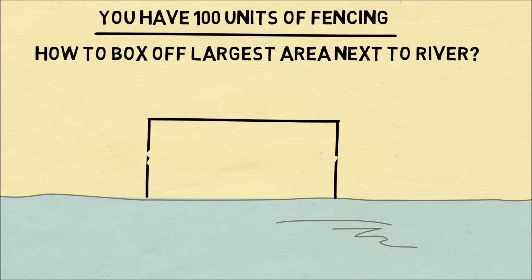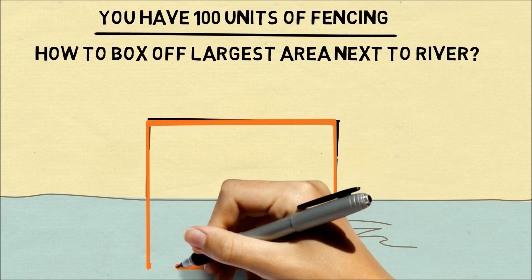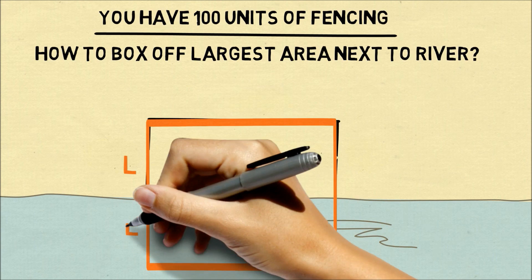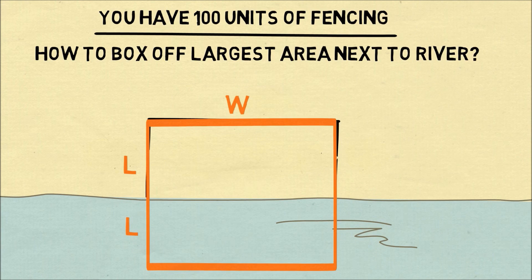All right, so how does that information help us solve the original problem. What we'll do is we'll imagine flipping a mirror image of this boxed-off area over to the other side of the river because if we optimize the side on one side of the river we must optimize the sum over both sides that's reflected.